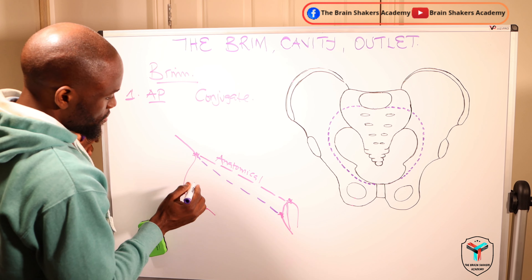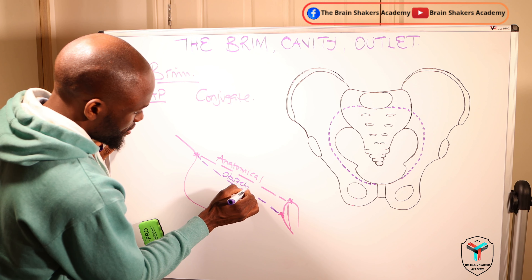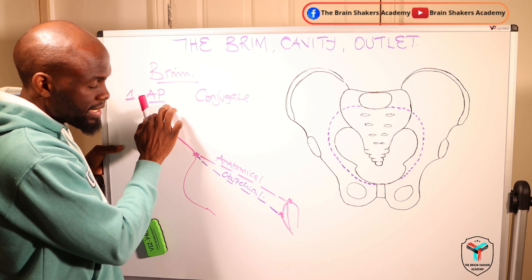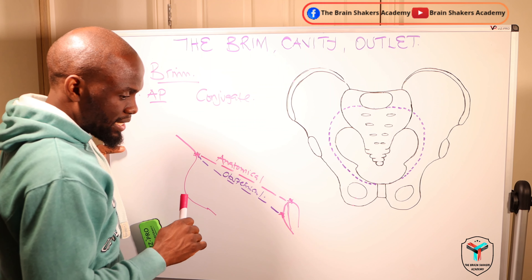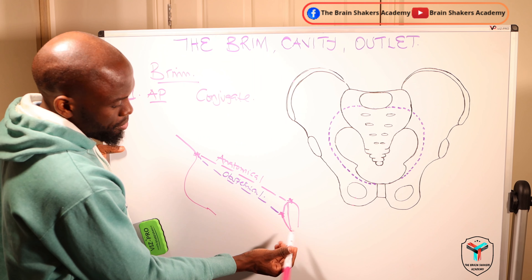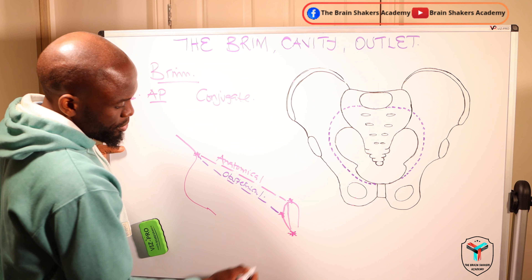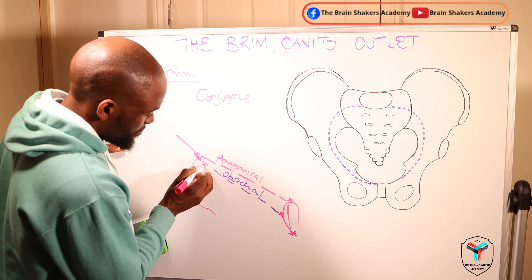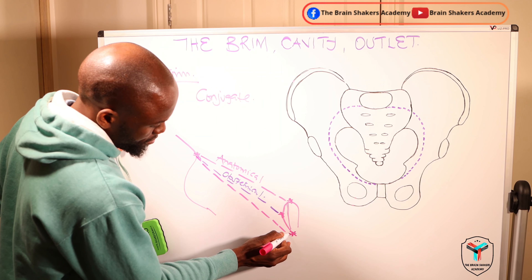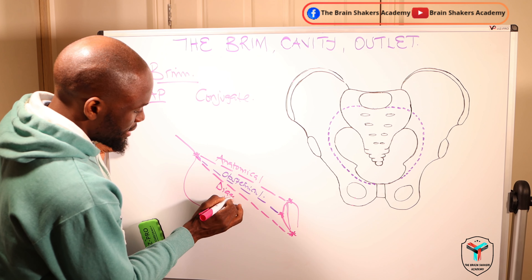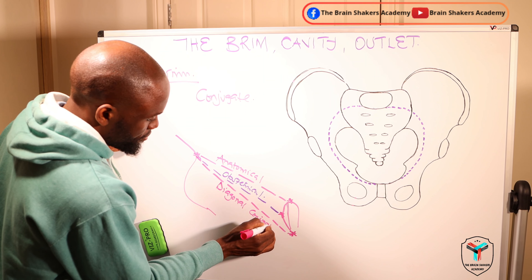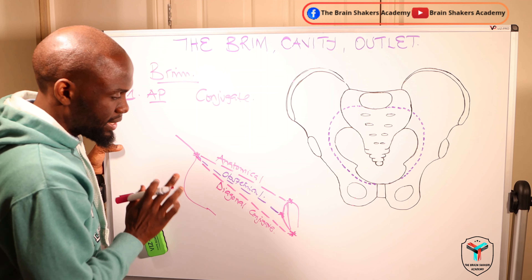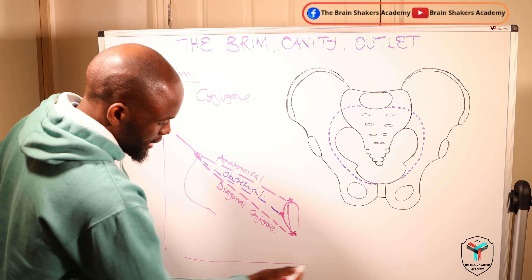The second is the obstetric conjugate. The symphysis pubis is not perfectly straight — it deviates slightly inside, as does the sacral promontory. So we go a little bit lower than the anatomical conjugate, measuring from a point slightly inside the symphysis pubis back to the sacral promontory. This means the anatomical conjugate is somewhat longer than the obstetrical conjugate. This measurement is what we refer to as the obstetrical conjugate.